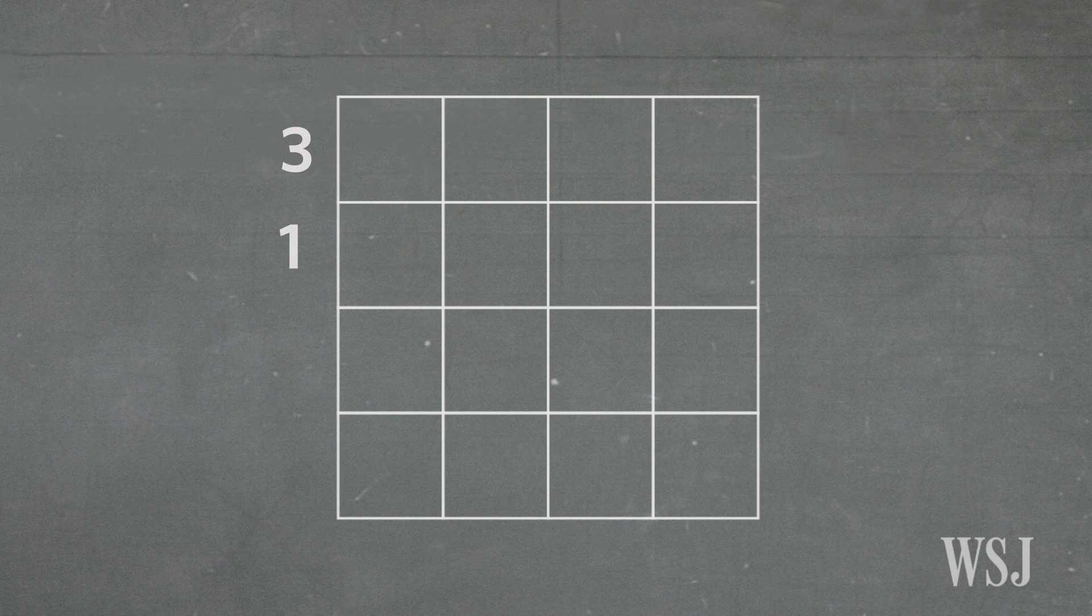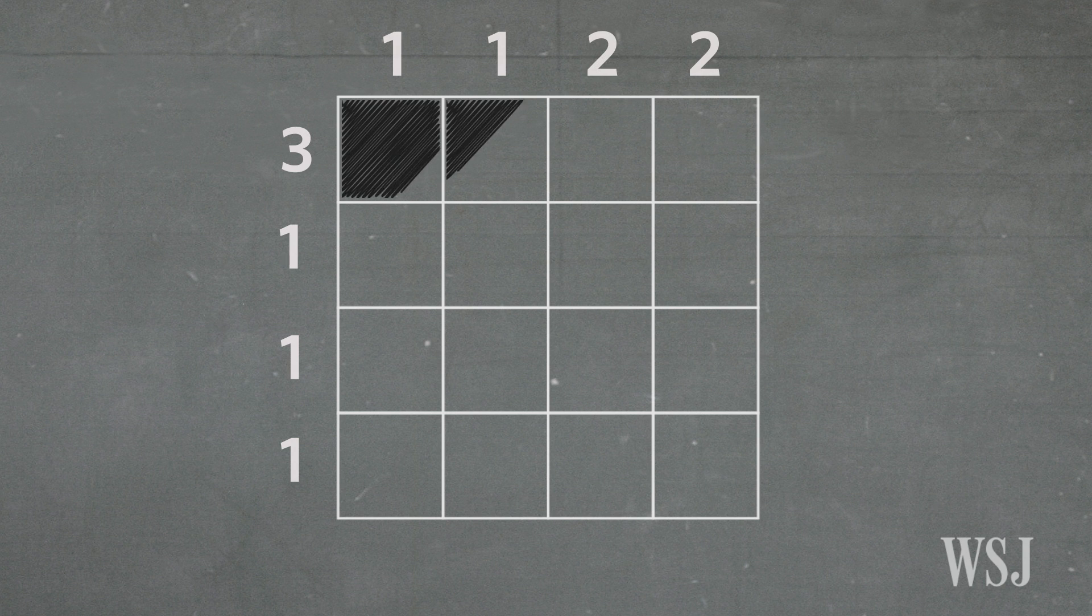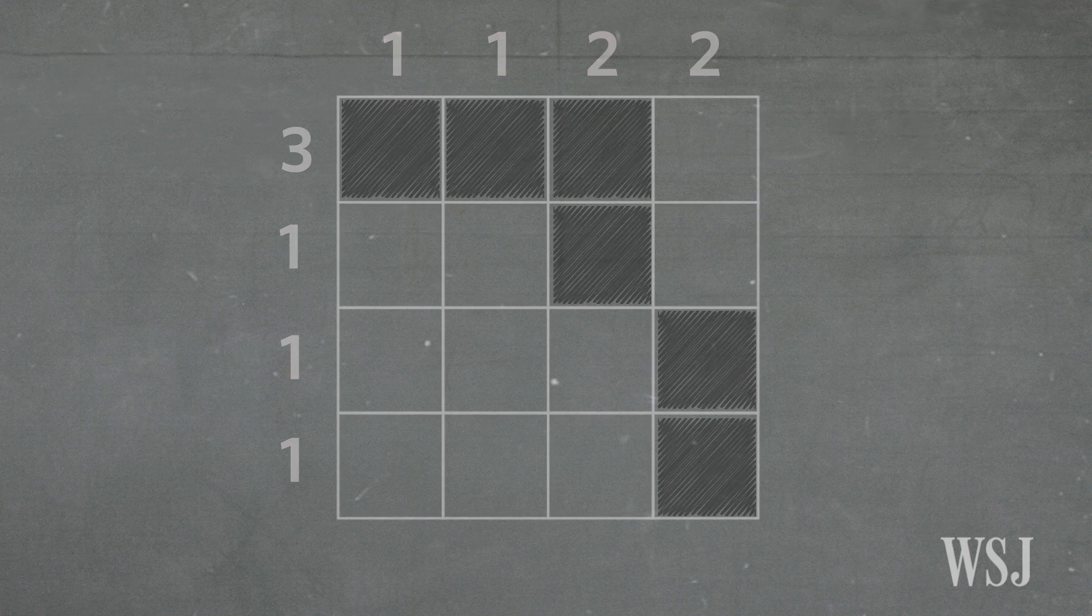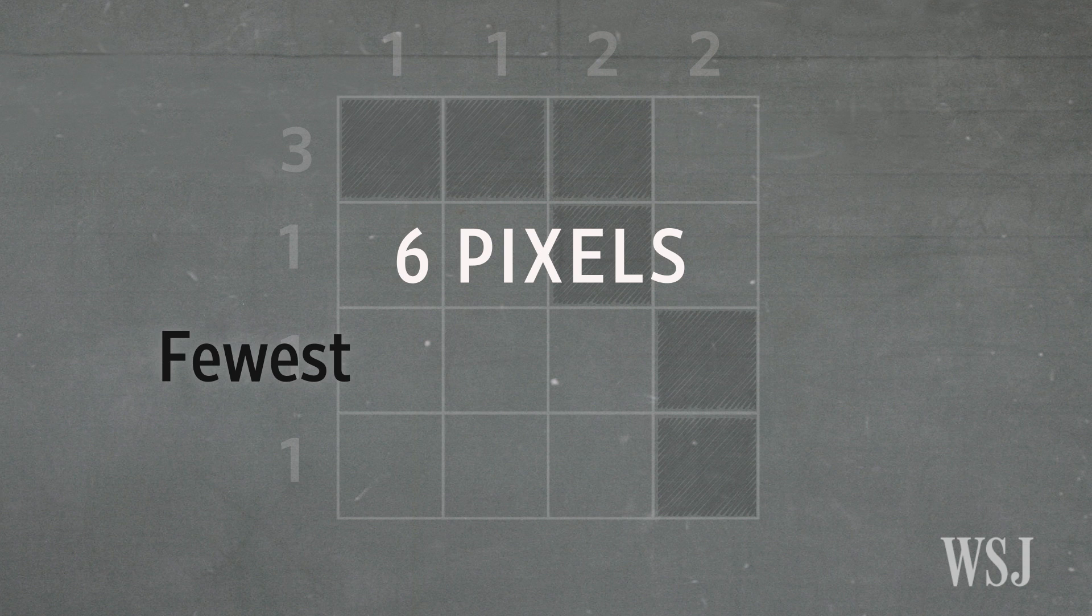So let's try three one one one down the side and to mix it up, try to get things to be unique, let's try one one two two across the top. When you do that, if you try to solve this puzzle, you'll find that it has a unique solution. So we know that the answer to the mini pixel problem is six pixels. That's the fewest number of dark pixels a pixel puzzler can have and have a unique solution.